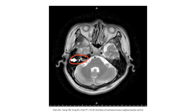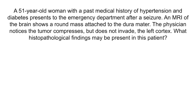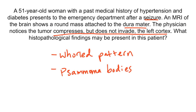Let's review with a quick question. A 51-year-old woman with a past medical history of hypertension and diabetes presents to the emergency department after a seizure. An MRI of the brain shows a round mass attached to the dura mater. The physician notices the tumor compresses but does not invade the left cortex. What histopathological findings may be present? This presentation is highly suggestive of meningioma, and the histopathological findings would show a whorled pattern of cells with psammoma bodies.